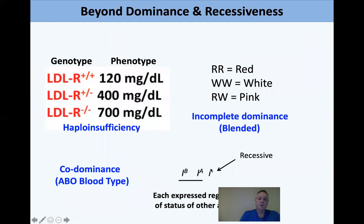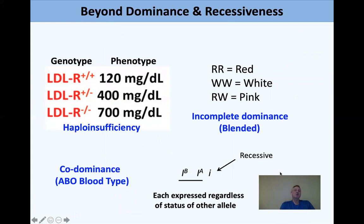Mendel's laws are great, with exceptions for linkage as we've seen. You should understand how to do Punnett squares and obtain typical 1:2:1 genotypic ratios and 3:1 phenotypic ratios. You should also be aware of more complex dihybrid crosses. But there are other phenomena beyond simple dominance and recessiveness.